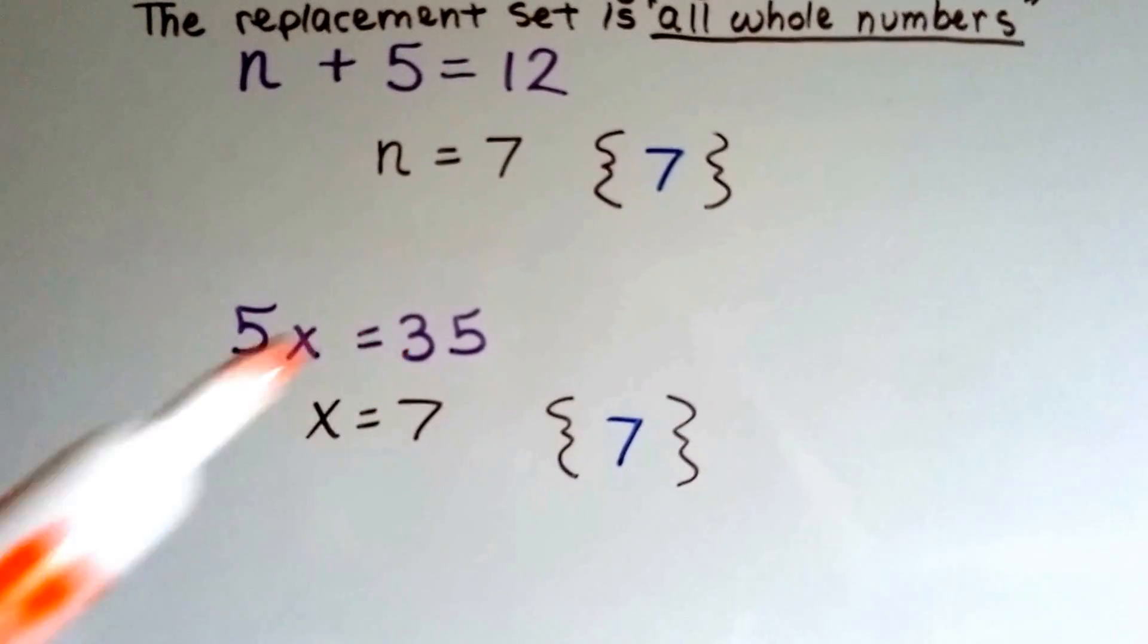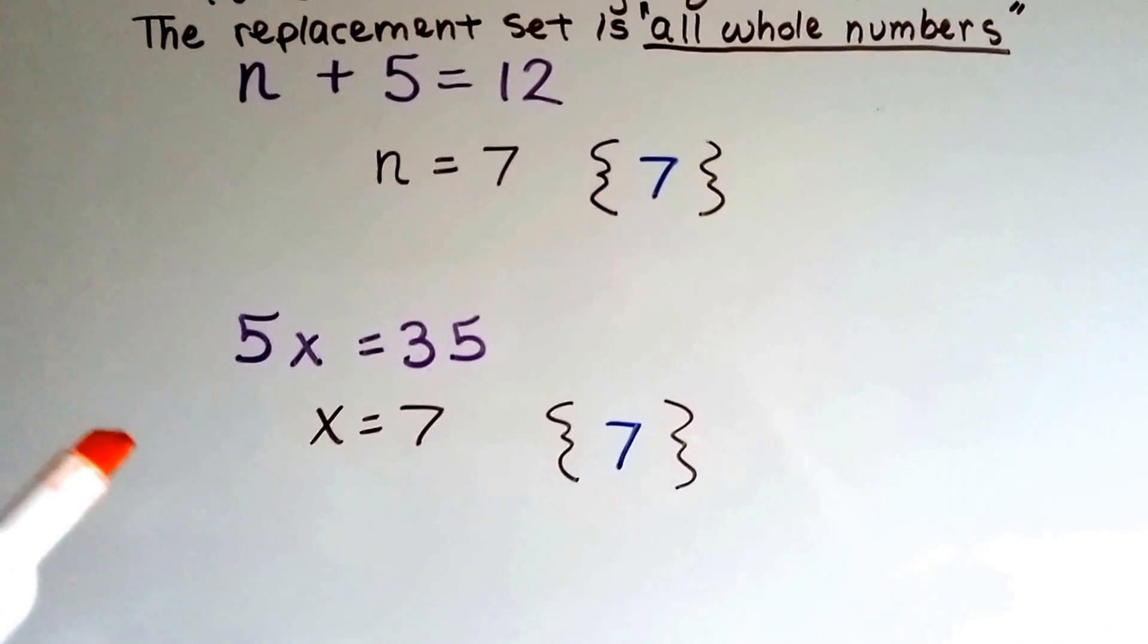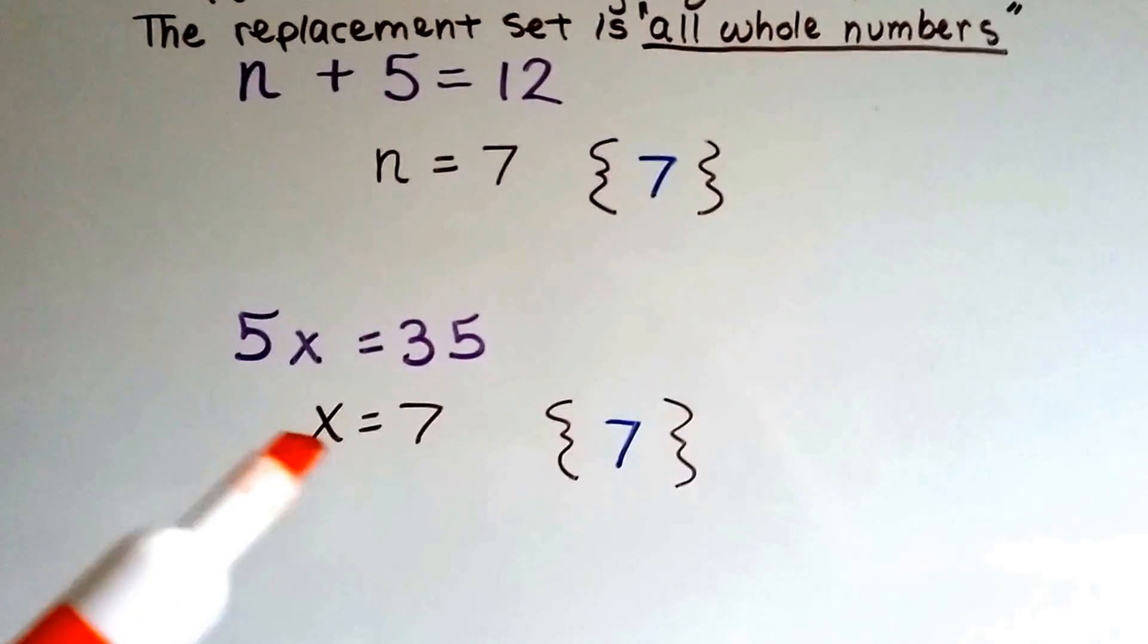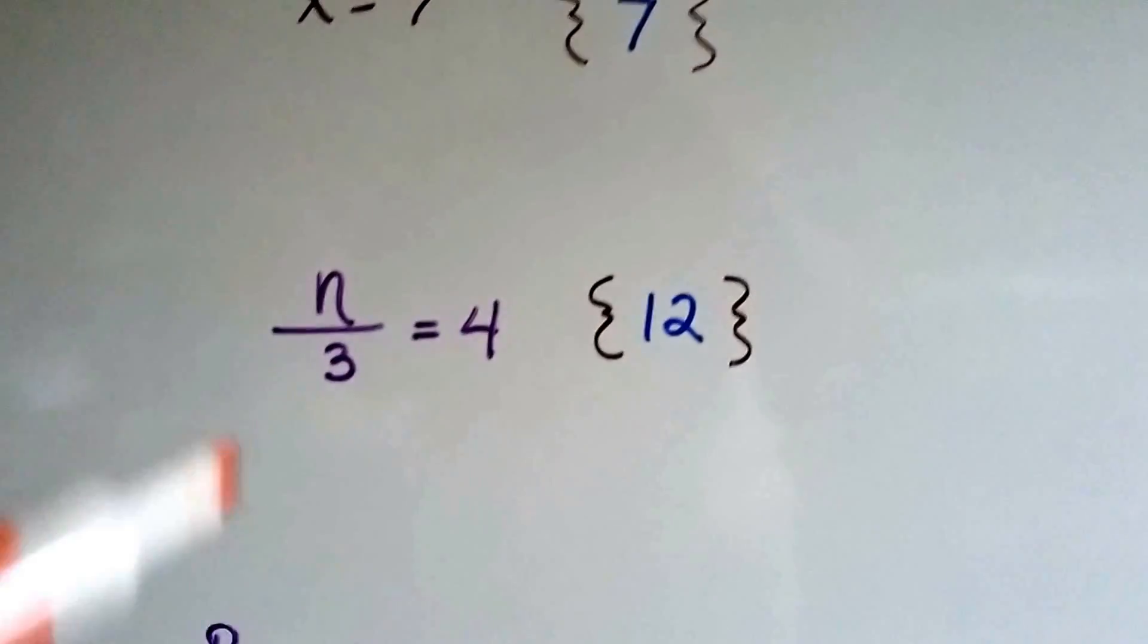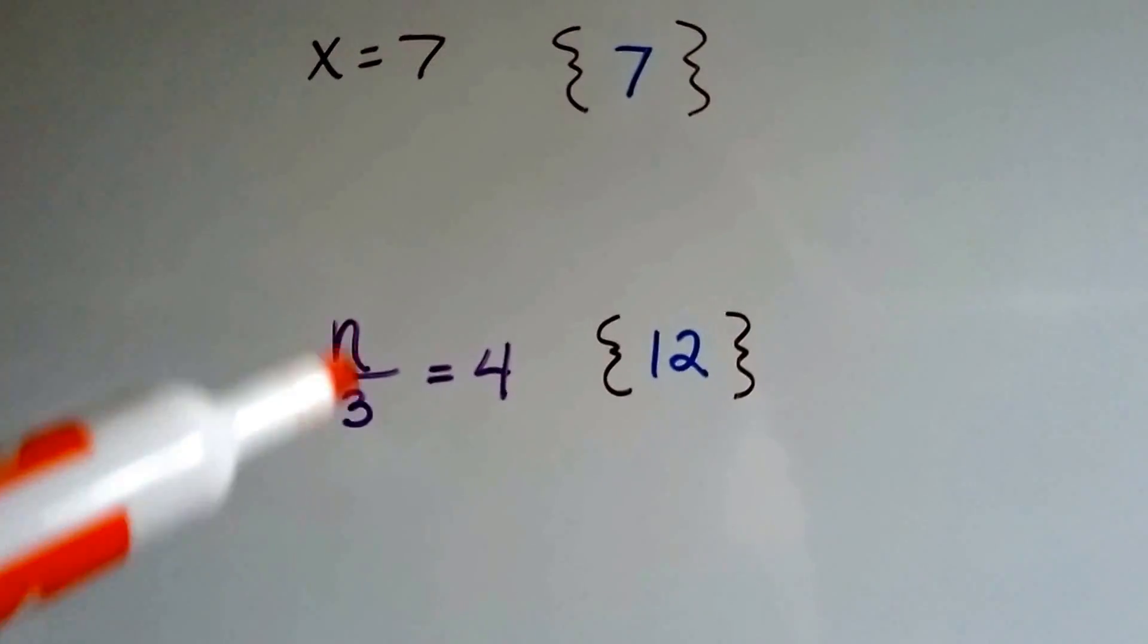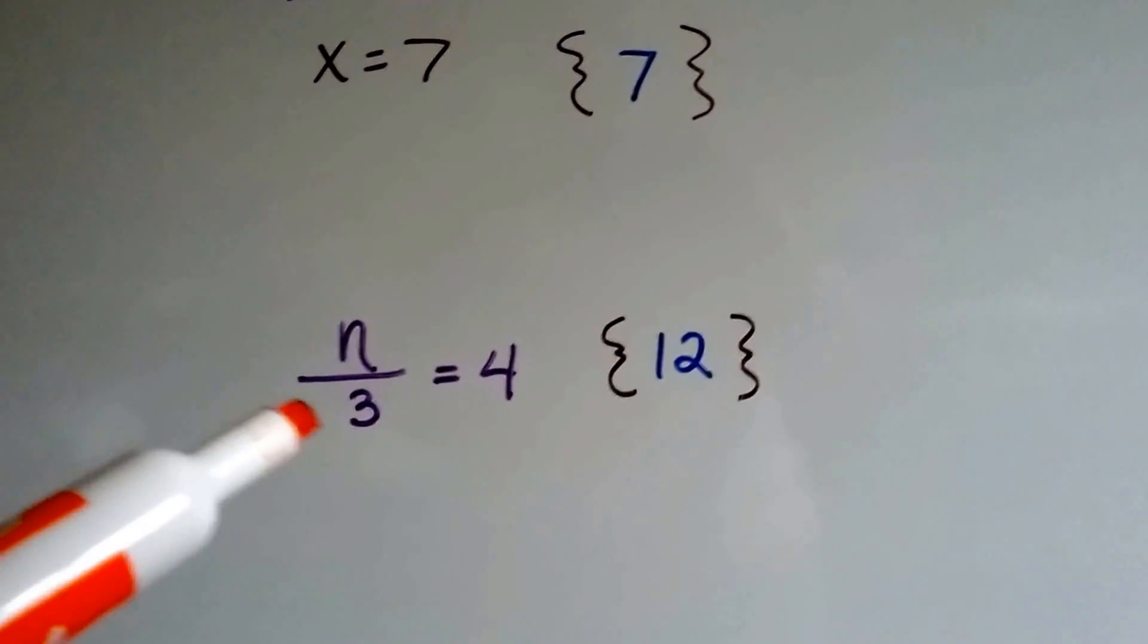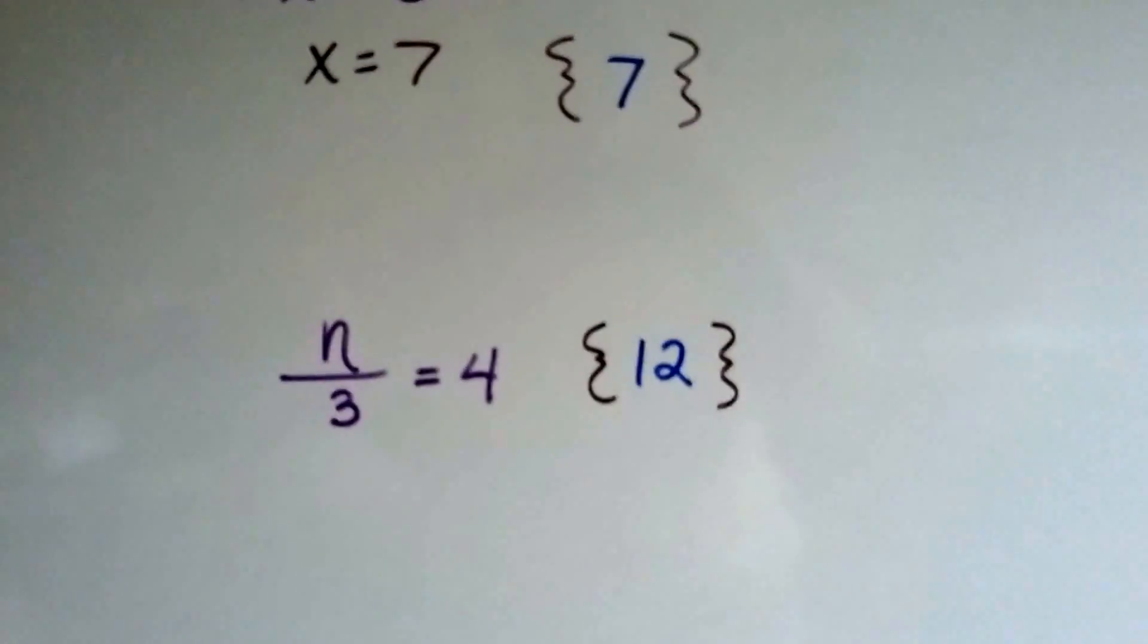How about 5x equals 35? What does x equal? Well, in this case, x equals 7. And that goes into our solution set. What about n divided by 3 equals 4? What divided by 3 equals 4? Or 4 times what? 4 times 3 equals what? 12. So 12 goes in our solution set.